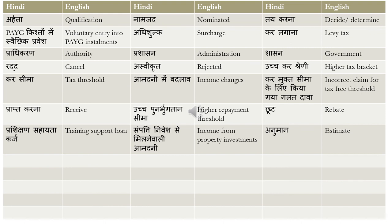'Sampatti nivesh se milne vali amdani' means income from property investment. The last word is 'anuman,' which means estimate. So these are the taxation-related words I have compiled. I will be uploading more videos giving you more words in this category.